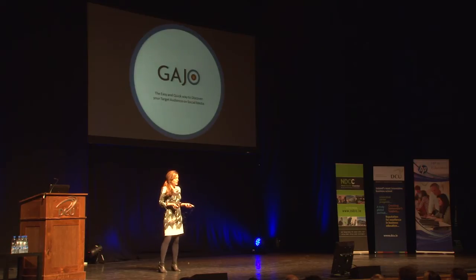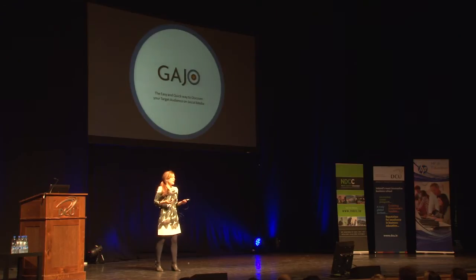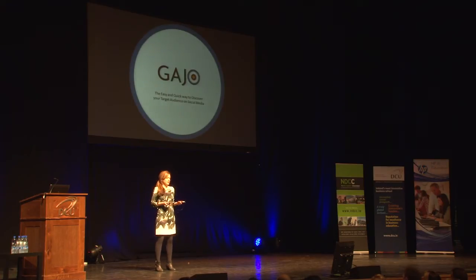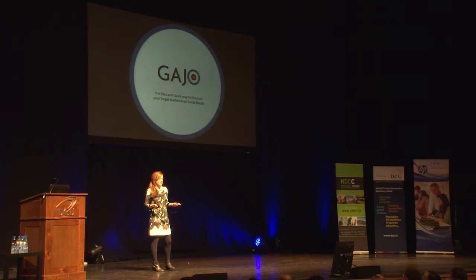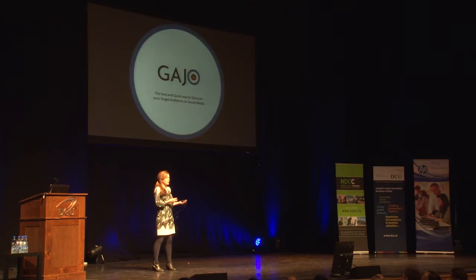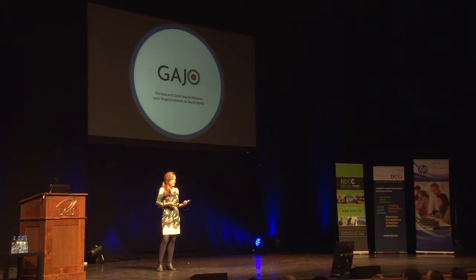My name's Deirdre Hogan, and I'm a research scientist from the School of Computing here in DCU. My PhD was in natural language processing — that's technology that processes human language. There are lots of different applications of that, for example, machine translation: the automatic translation from one language to another, or sentiment analysis.